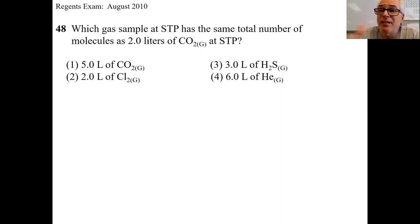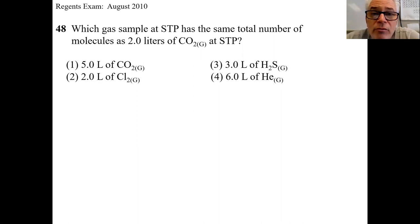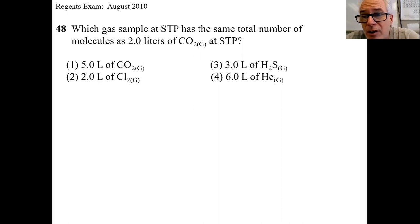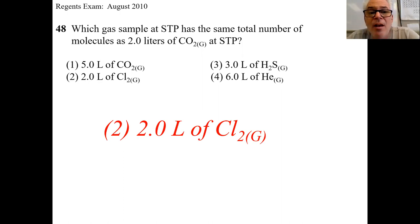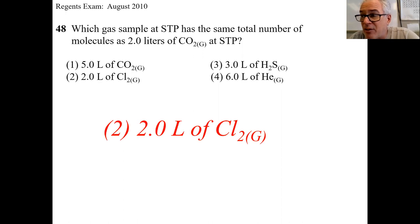You could convert liters into moles and then moles into particles five times to see which two match up, or you can remember Avogadro's hypothesis: equal volumes of different gases at the same temperature and pressure have the same number of particles and the same number of moles. So if you've got two liters of this gas, two liters of any gas at the same temperature and pressure — they said STP — one gas has to have the same conditions as the other. It could be any temperature and pressure, but it's got to be the same.